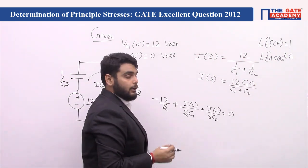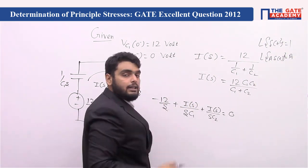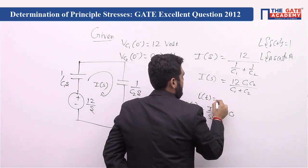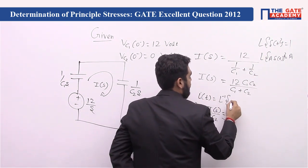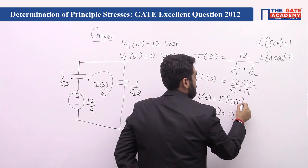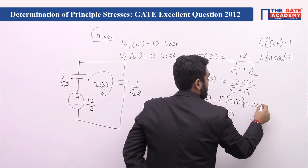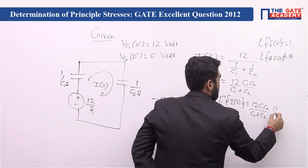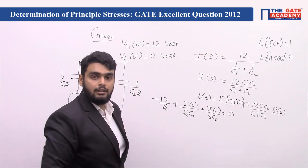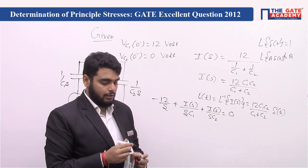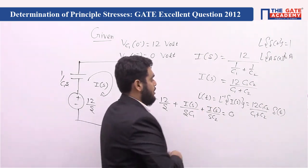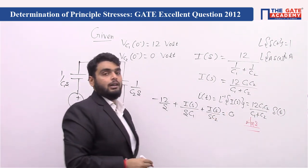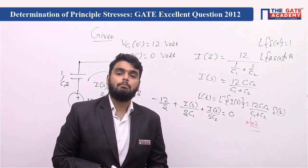We take the inverse Laplace of I(s). Since I(s) is a constant, i(t) = that constant multiplied by δ(t), which is again an impulse function. So option D is the answer — the current i(t) is an impulse function. This was the GATE question.